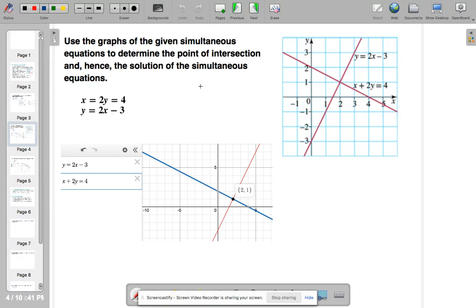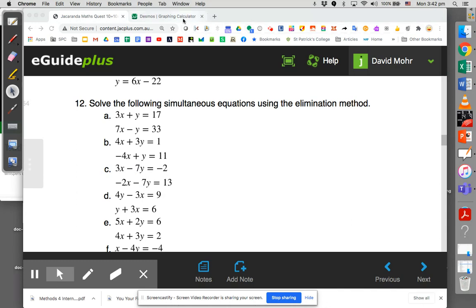Now, I mentioned before that there's two types or two ways in which you can solve simultaneous equations. And one way is graphically. So here you can see, I use graphs of the given simultaneous equations to determine the point of intersection and hence the solution of the simultaneous equations. Now, I drew both those graphs, it's different ones here,